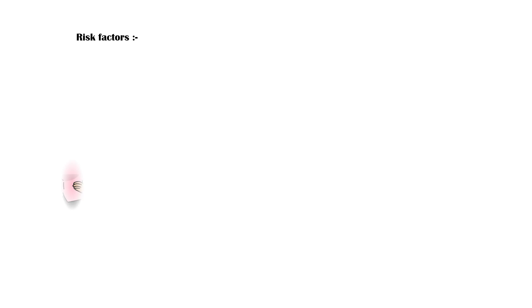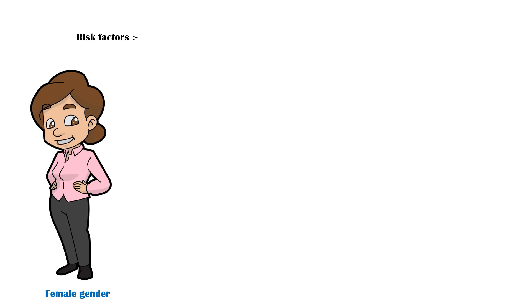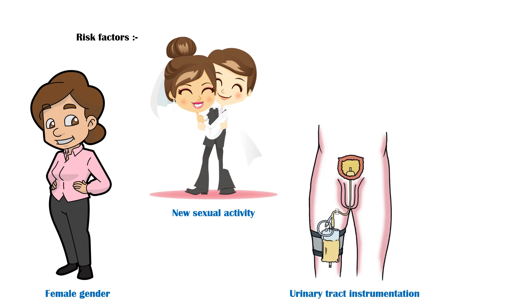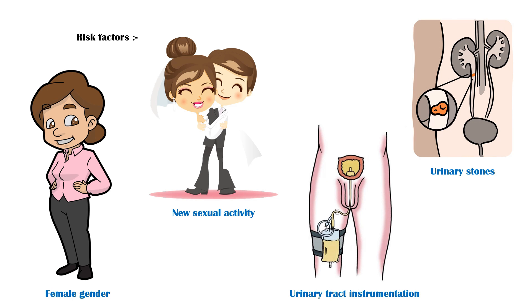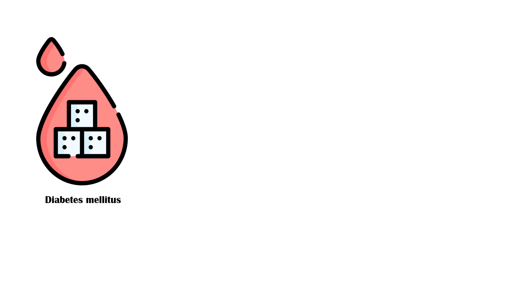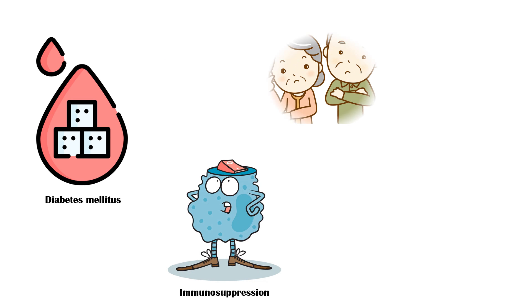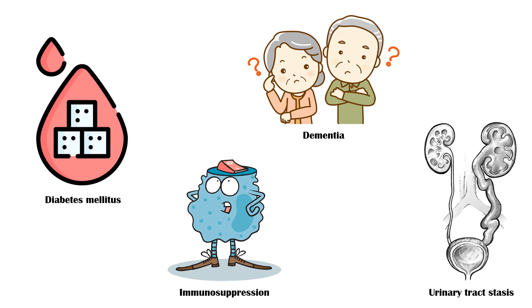Risk factors for getting urinary tract infections include female gender, especially after menopause, new sexual activity especially in young females, urinary tract instrumentation such as catheterization, urinary tract stones, diabetes mellitus, immunosuppression, dementia, and urinary tract stasis.